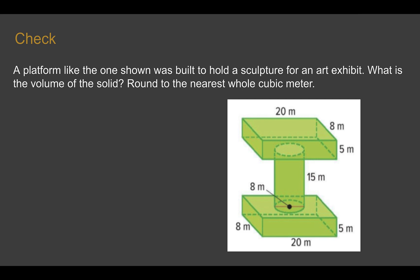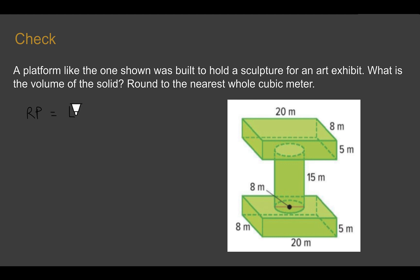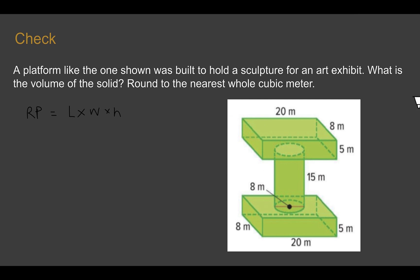Check your understanding. Read through the situation, and find the volume of this solid. Round to the nearest whole cubic meter. As a quick hint, the volume for a rectangular prism is equal to length times width times height, and there are two of them. Pause the video now and complete the check.